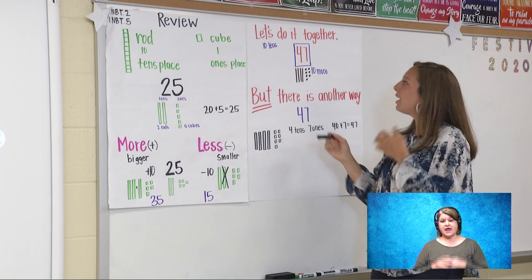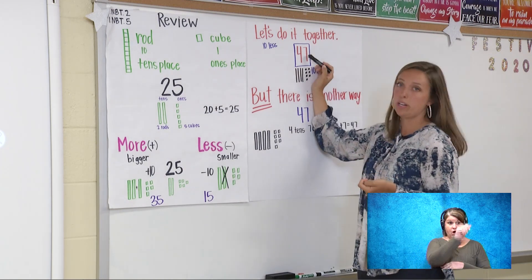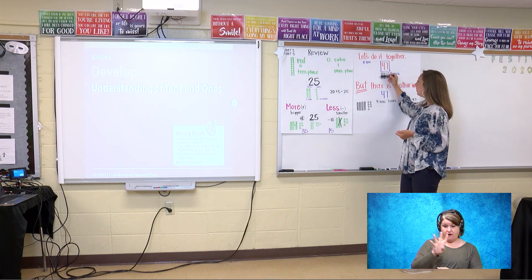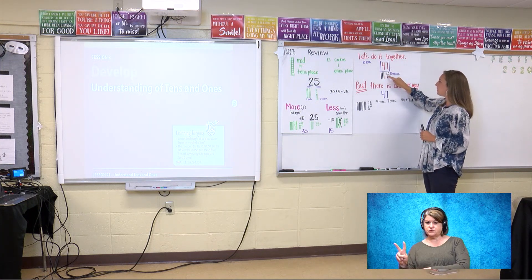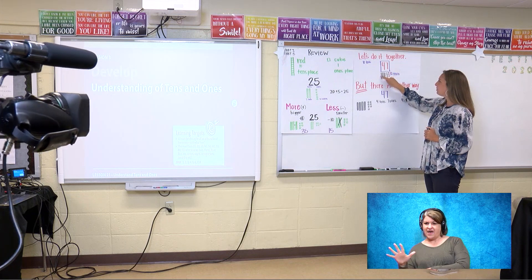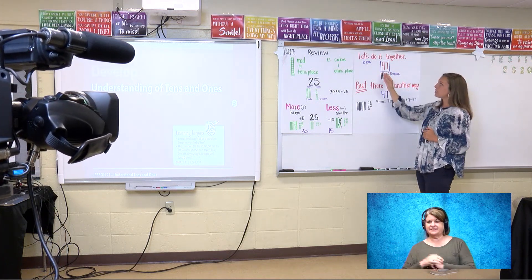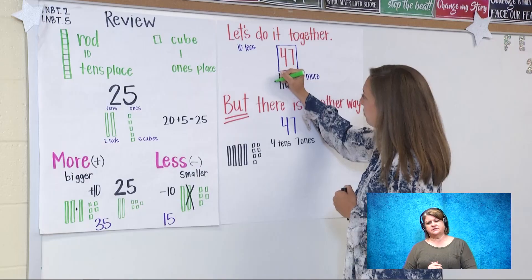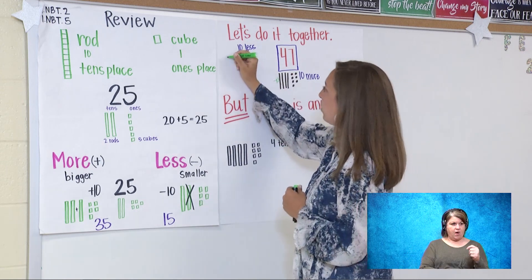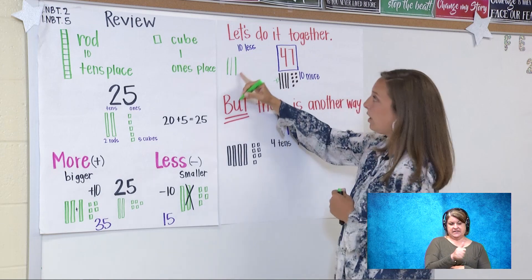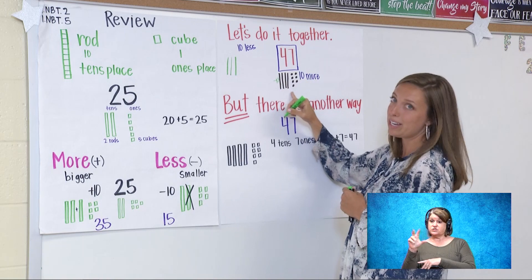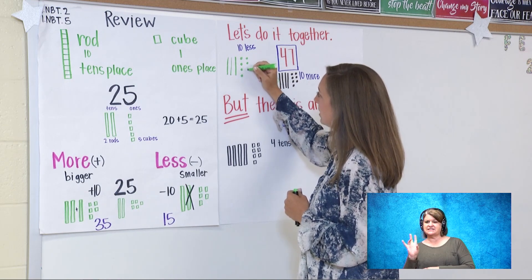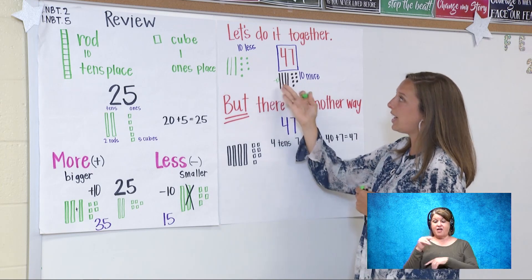All right, let's look up here. I have four tens and seven ones to represent the number 47. Let's count just to check: 10, 20, 30, 40, 41, 42, 43, 44, 45, 46, 47. I want to go 10 less, so I'm taking away a 10. It is going to get smaller. Minus a rod. Now I have: 10, 20, 30. 10 less than 47 is 30, but I cannot forget about my ones: 1, 2, 3, 4, 5, 6, 7. I have 37. 37 is 10 less than 47.